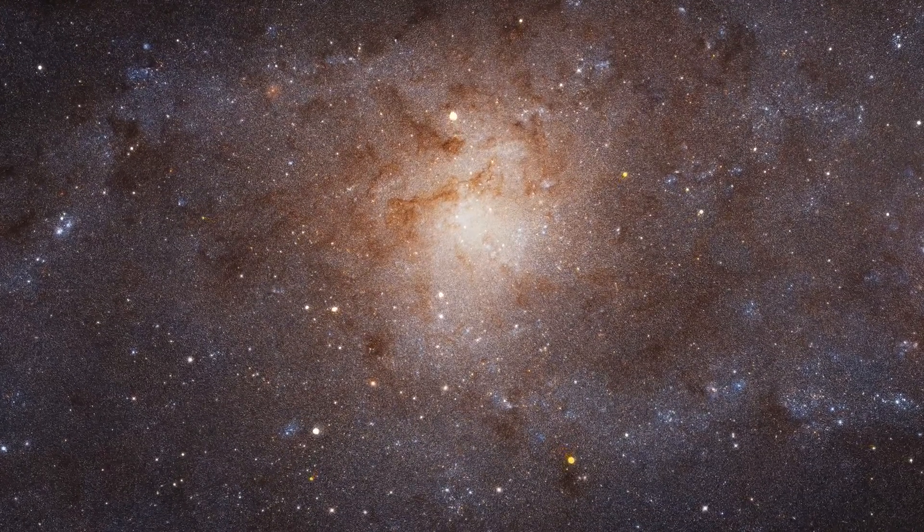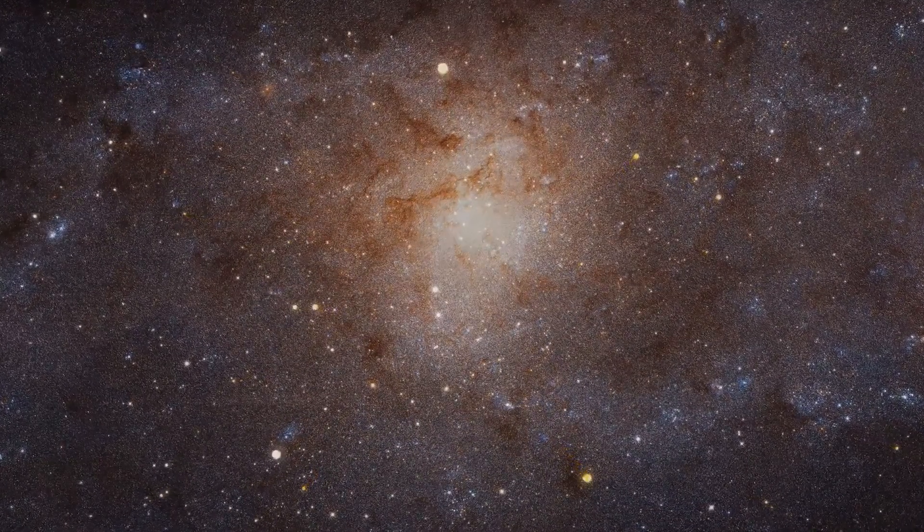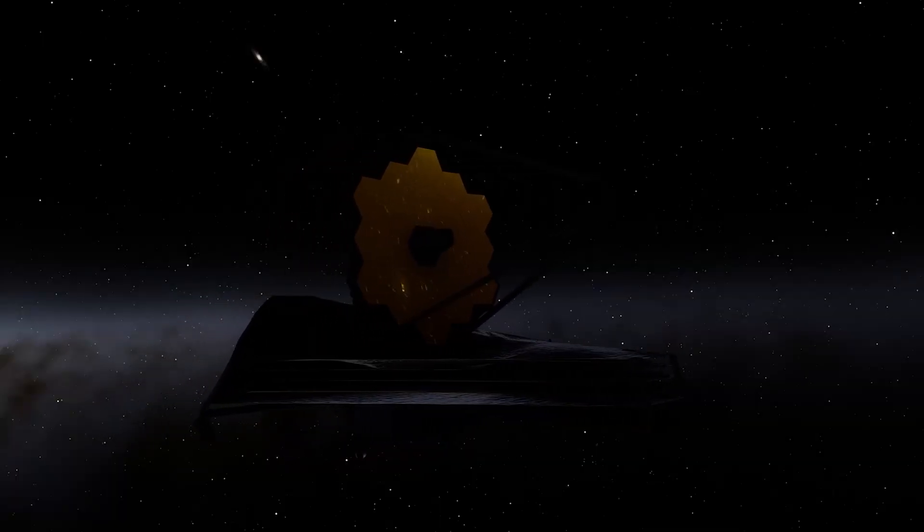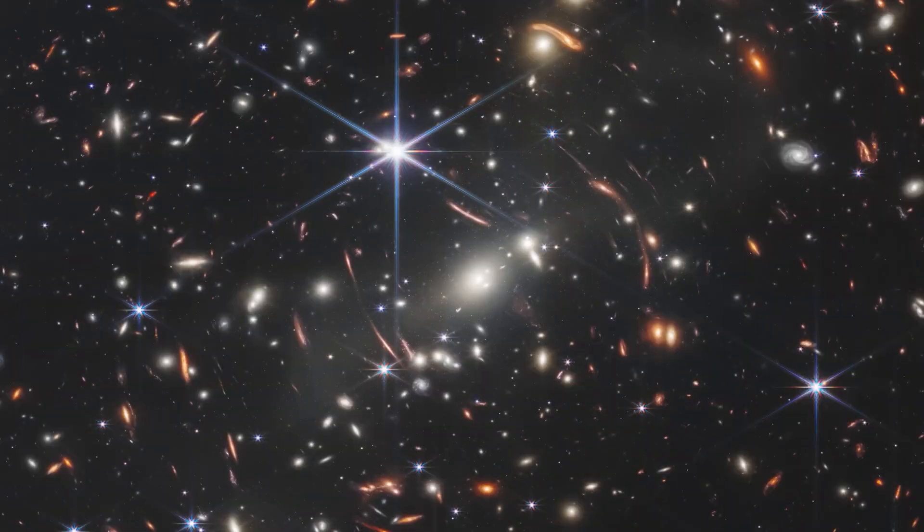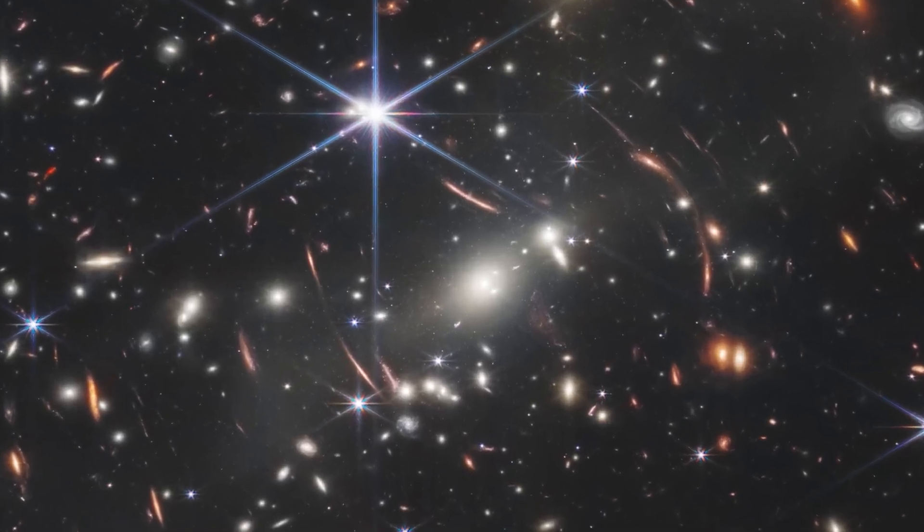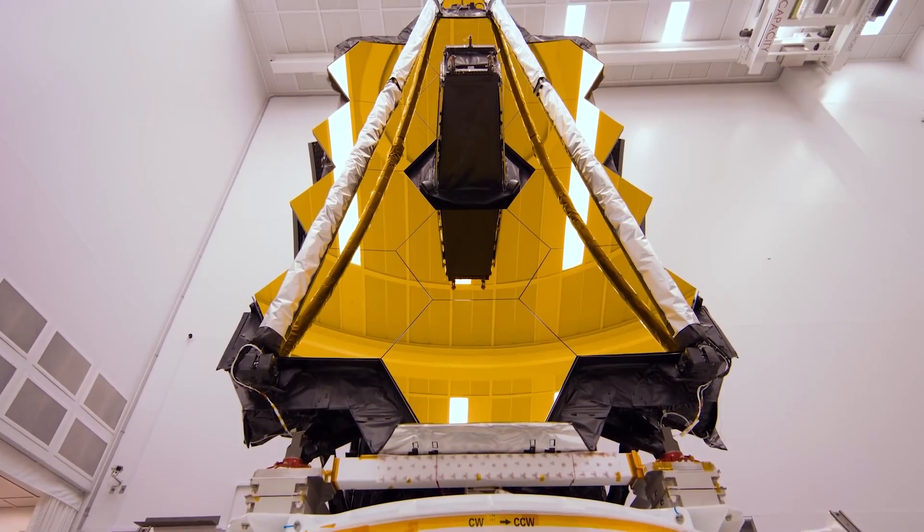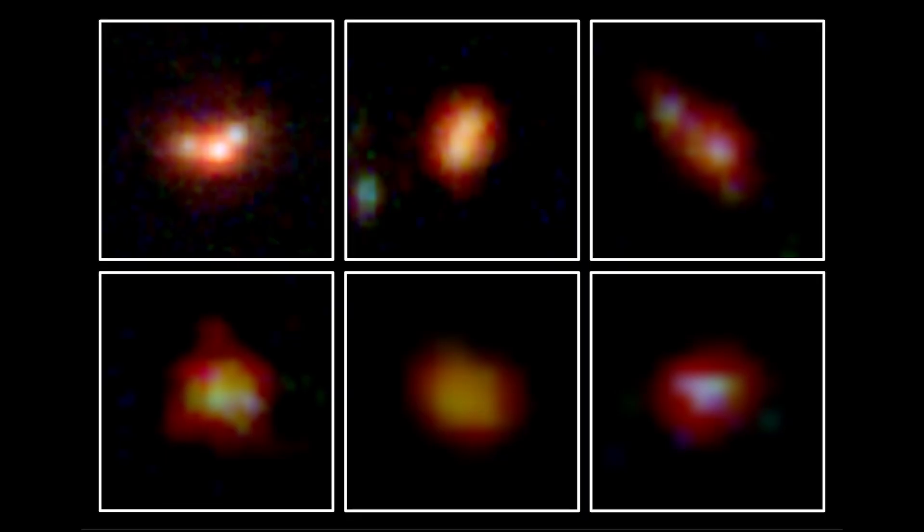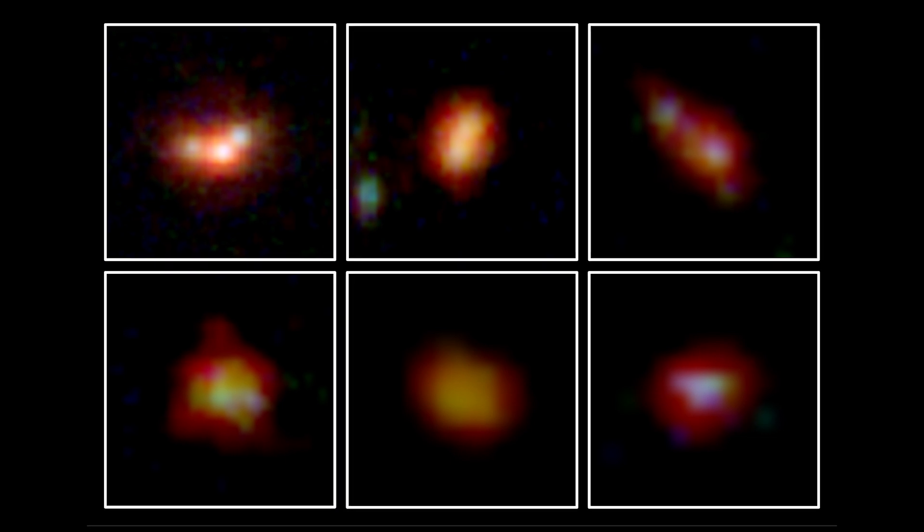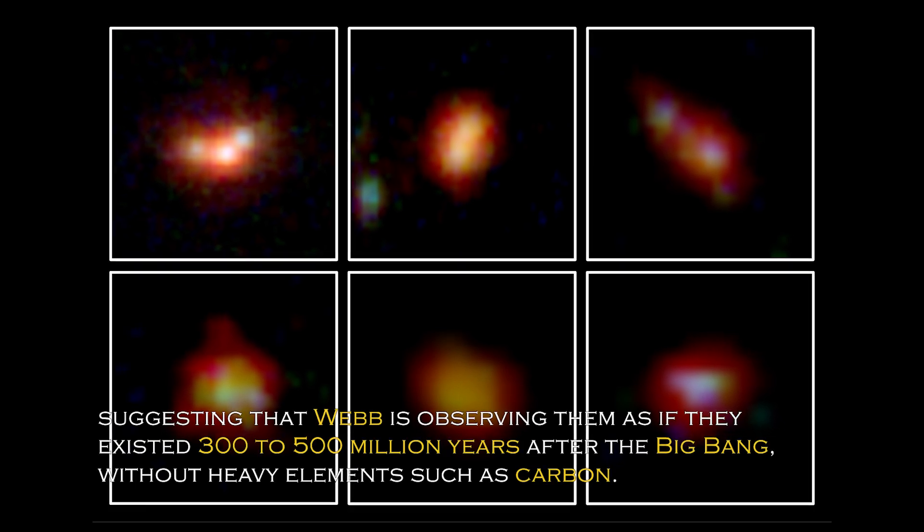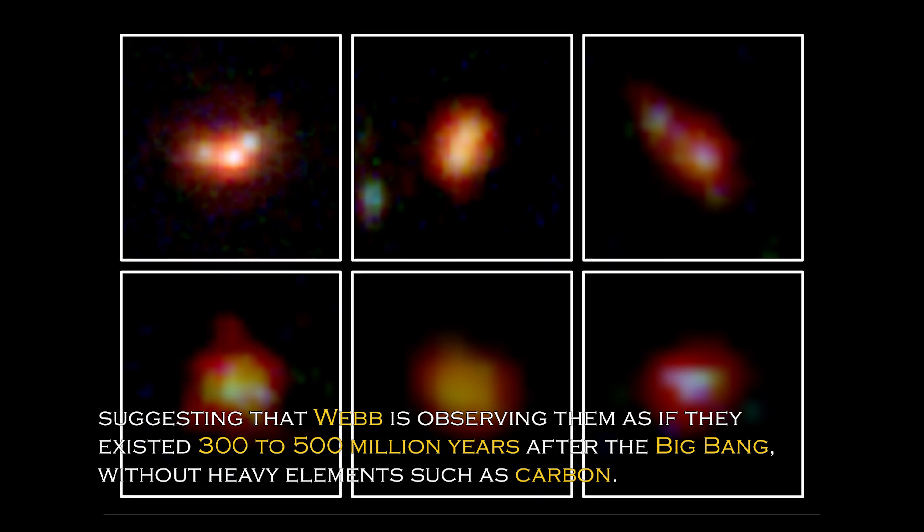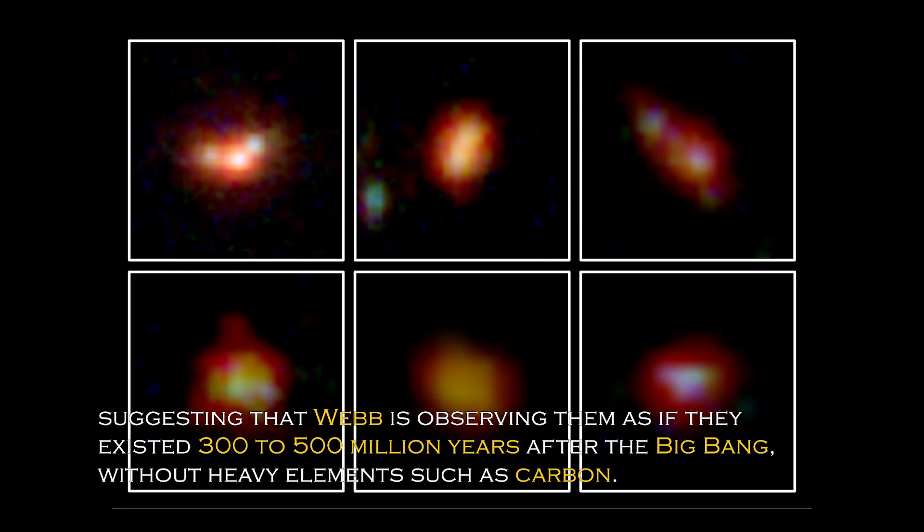Discovery has had a major impact on our understanding of the universe and has prompted NASA to develop even more powerful telescopes than the James Webb Space Telescope to confirm whether our understanding of the Big Bang is correct. Data obtained from Webb's spectrometer and near-infrared camera have revealed that four of the six primordial galaxies have extreme redshifts, suggesting that Webb is observing them as if they existed 300 to 500 million years after the Big Bang, without heavy elements such as carbon.